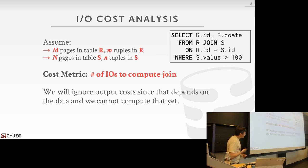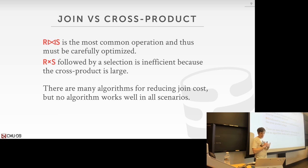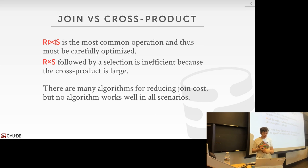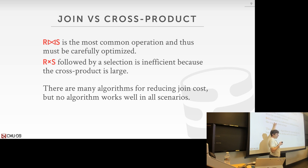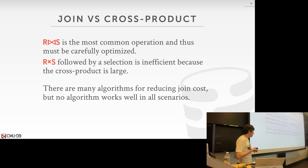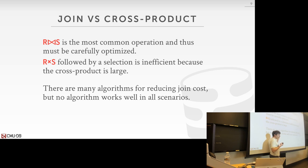We're focusing on inner equi-joins today because that's the most common thing. We're not going to bother talking about cross products or Cartesian products, because these are almost super rare and there's nothing you can really do to make them run faster — it's just two for loops iterating one after the other, like a nested loop join without a predicate to check.